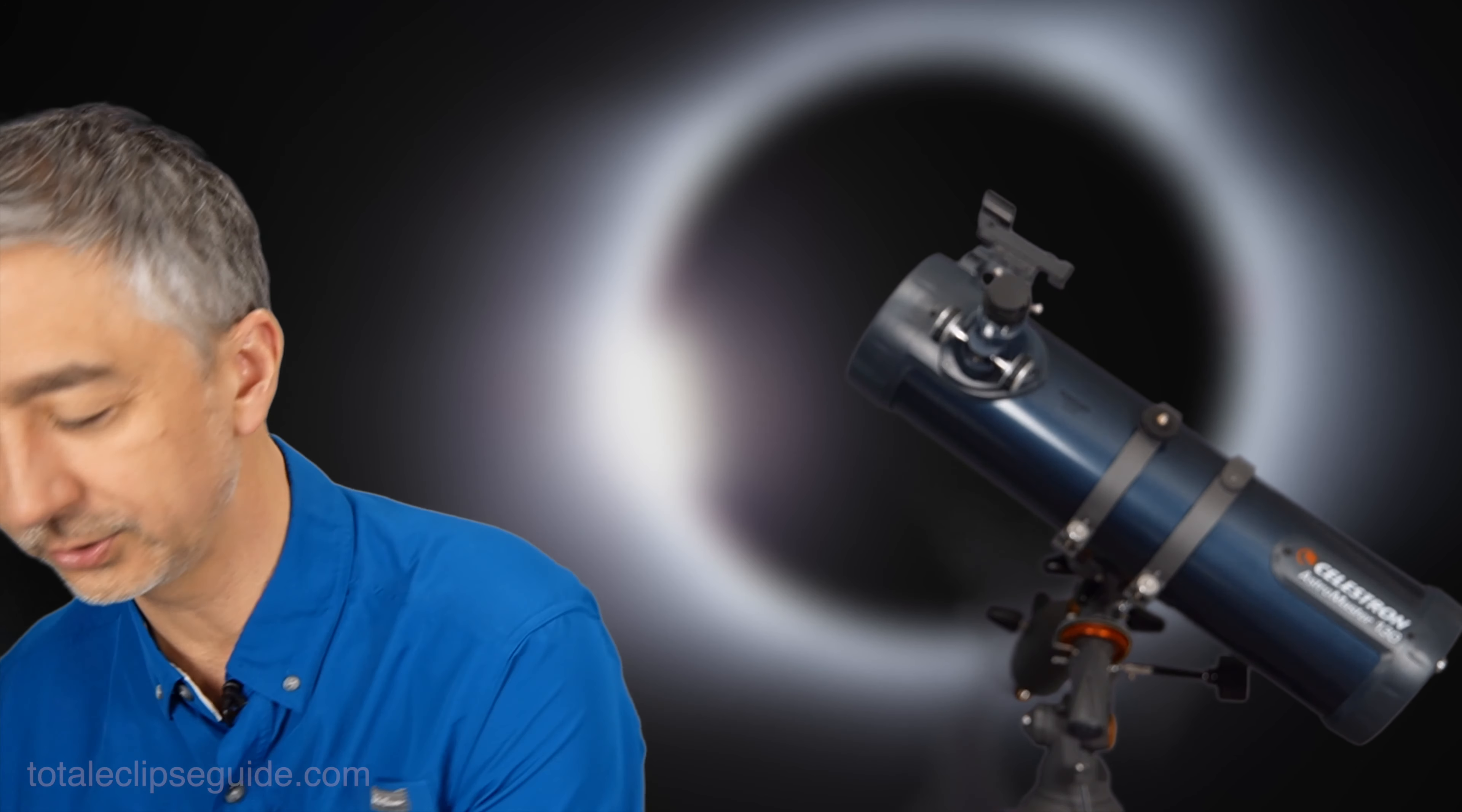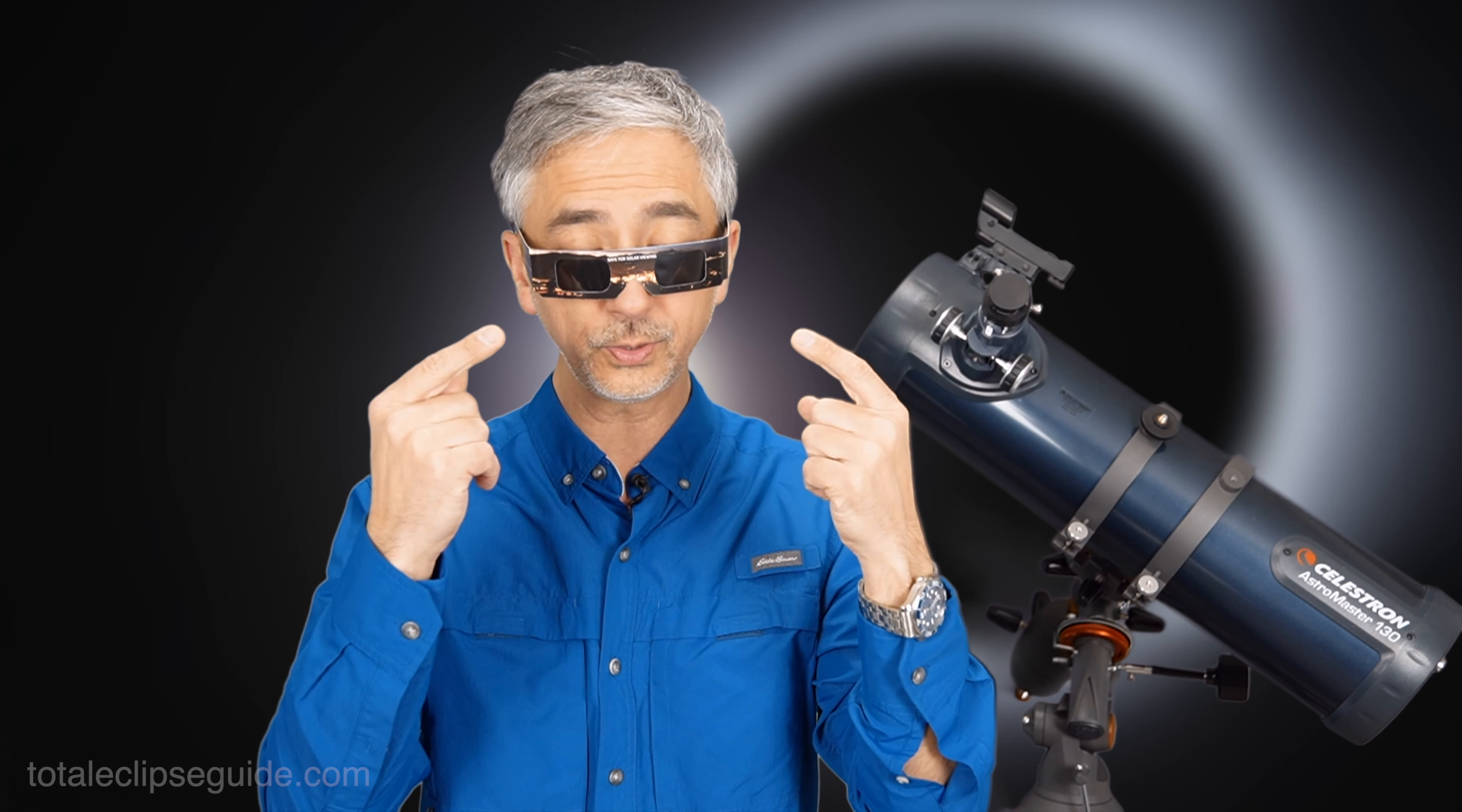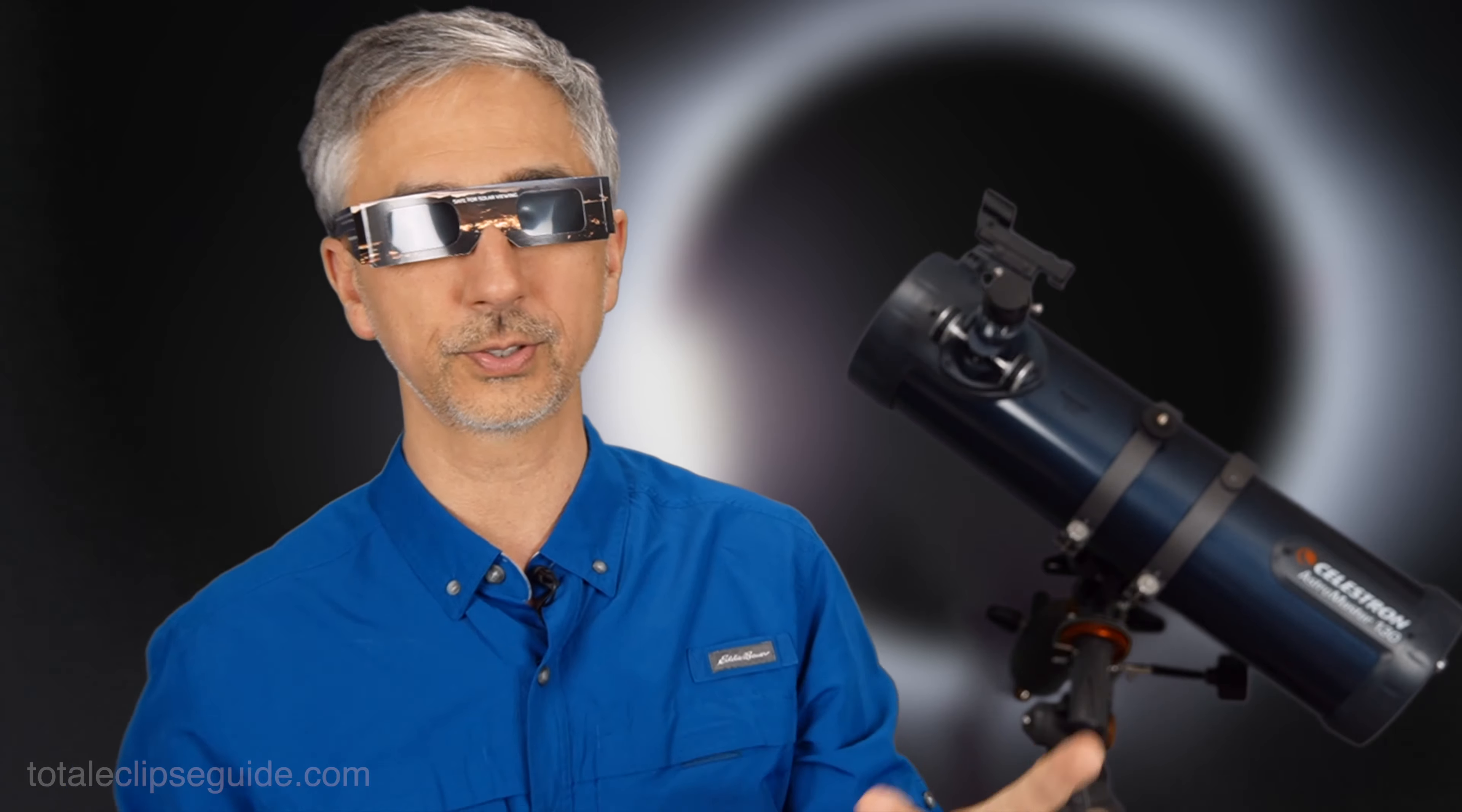Now one critical thing that you need to have are solar eclipse glasses. Preferably buy them from your local dealer or even Home Depot. I've seen Home Depot have eclipse glasses because you need to protect your eyes from the sun when the sun is out and it's only blocked a little bit by the moon. You put these solar eclipse glasses on so you can safely look at the sun.